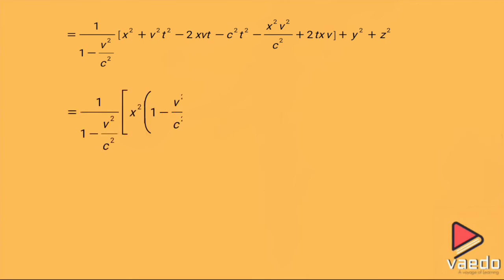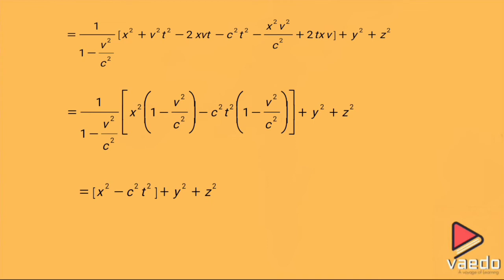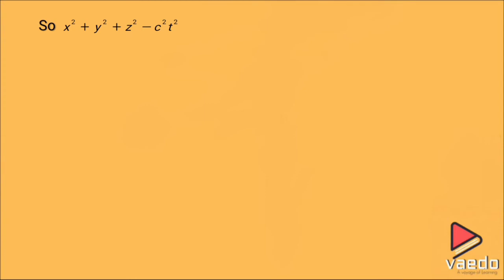Further simplifying with the factor 1/(1 − v²/c²), we find the terms (1 − v²/c²) appear in both numerator factors for x² and c²t², and after cancellation we obtain x² + y² + z² − c²t².